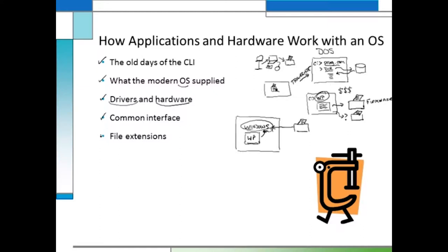One thing you'll see in our discussion is what file extensions mean to us — this is part of how applications and hardware work together with an operating system. In the DOS era, to open a file you had to first open the right program and then reference the file, and you might make the wrong association. So we came up with the concept of extensions, sometimes called associations — a way to mark each file created with a program so the operating system knows how to open it, making it easy to open your content and files.